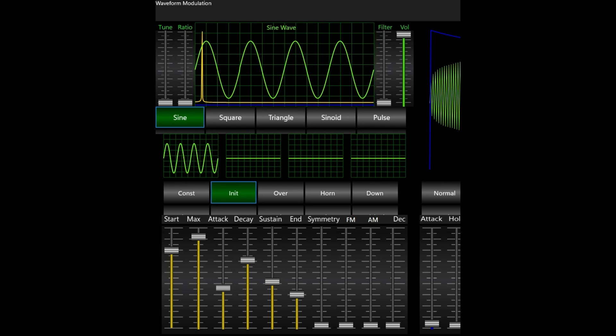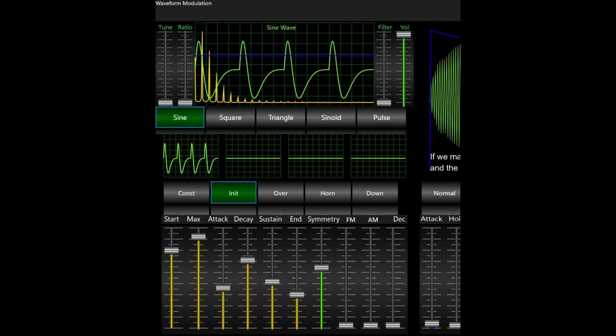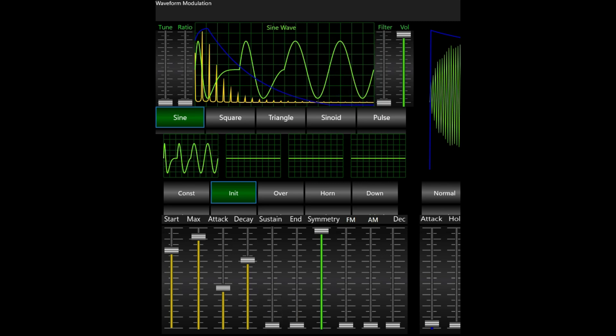Let's start with a clean sine wave. If we make it more asymmetric, the overtones, the yellow bars, raises, and the sound gets brighter. If we turn the constant modulation, blue line, to a dynamic raise and fall, the sound starts bright and ends soft.